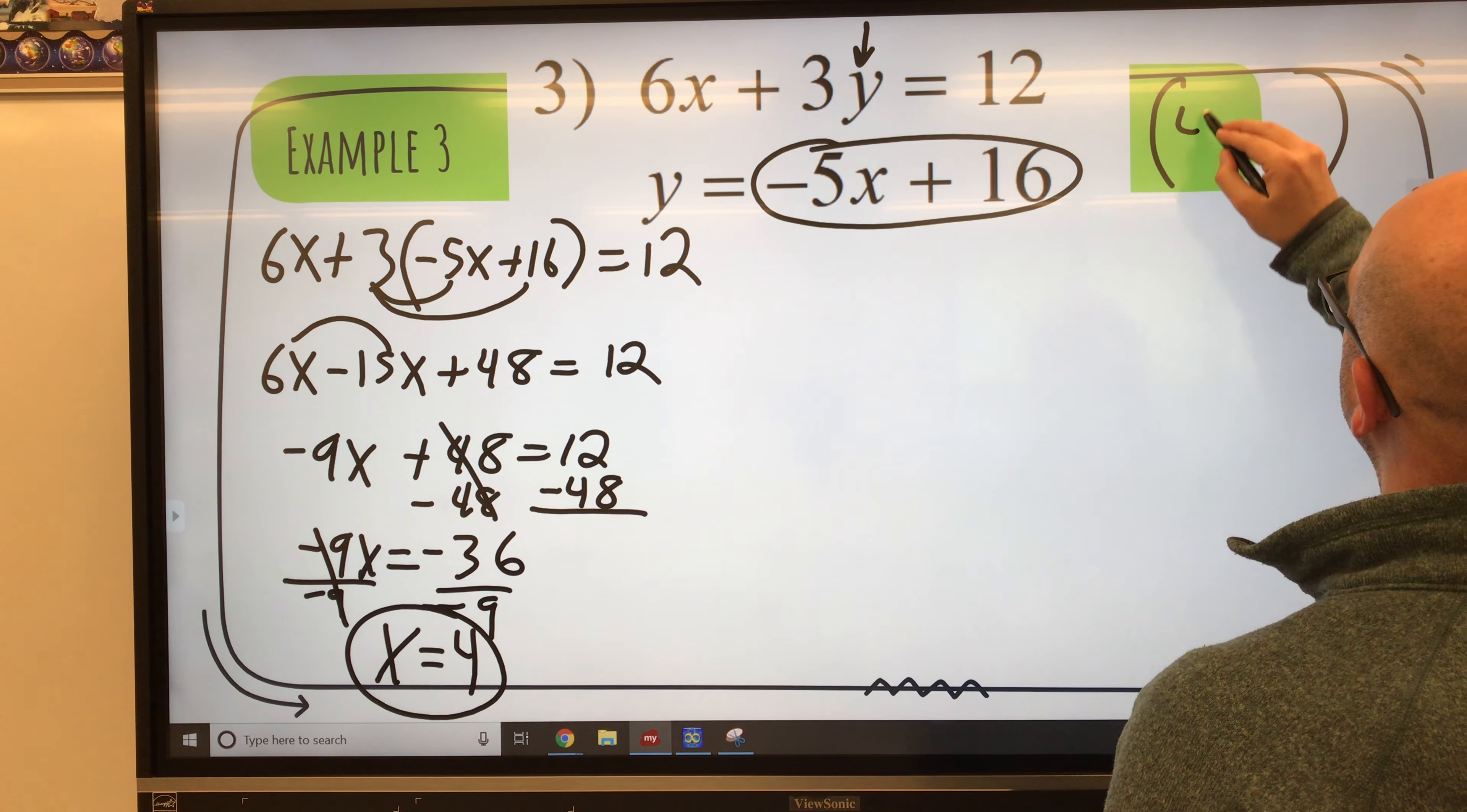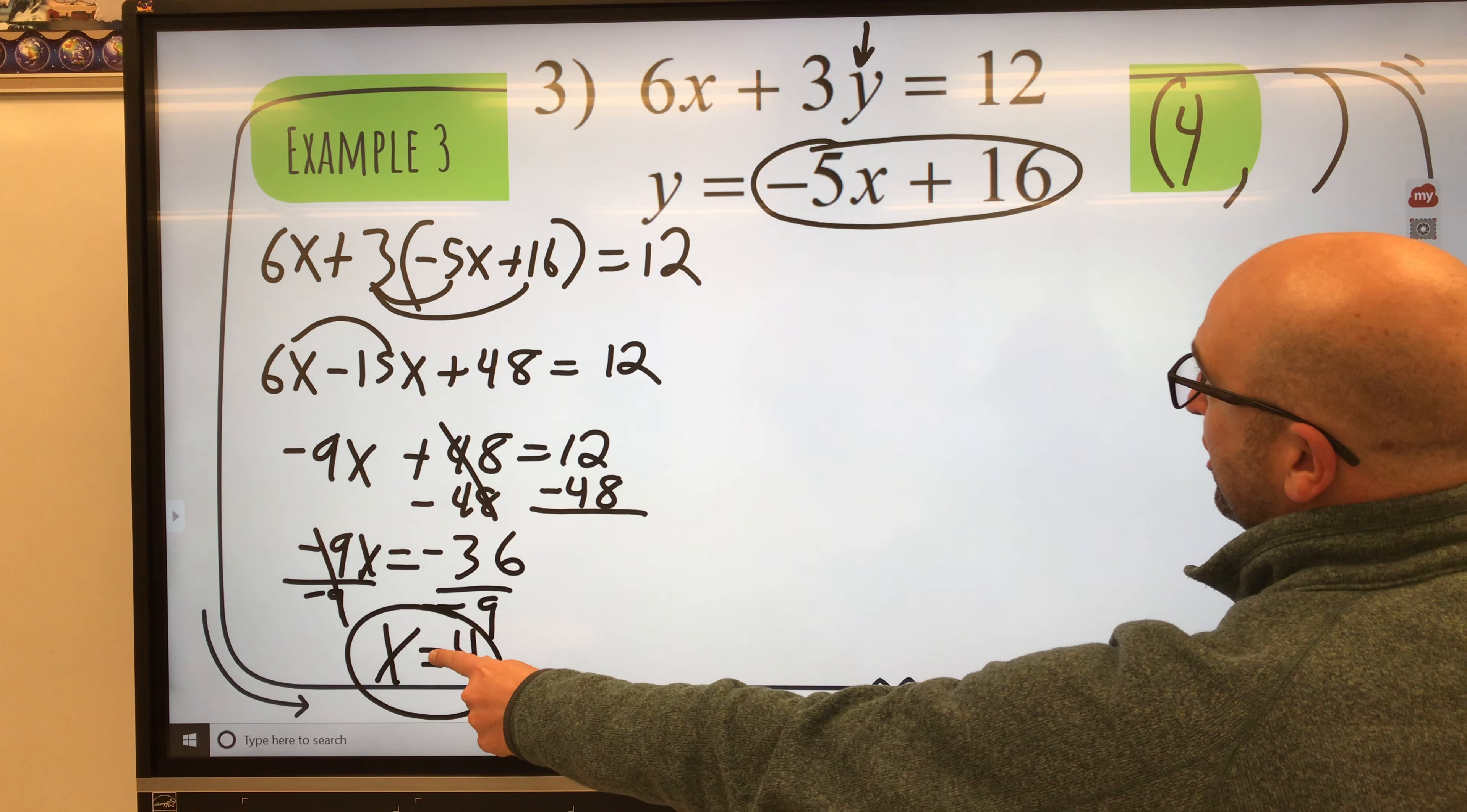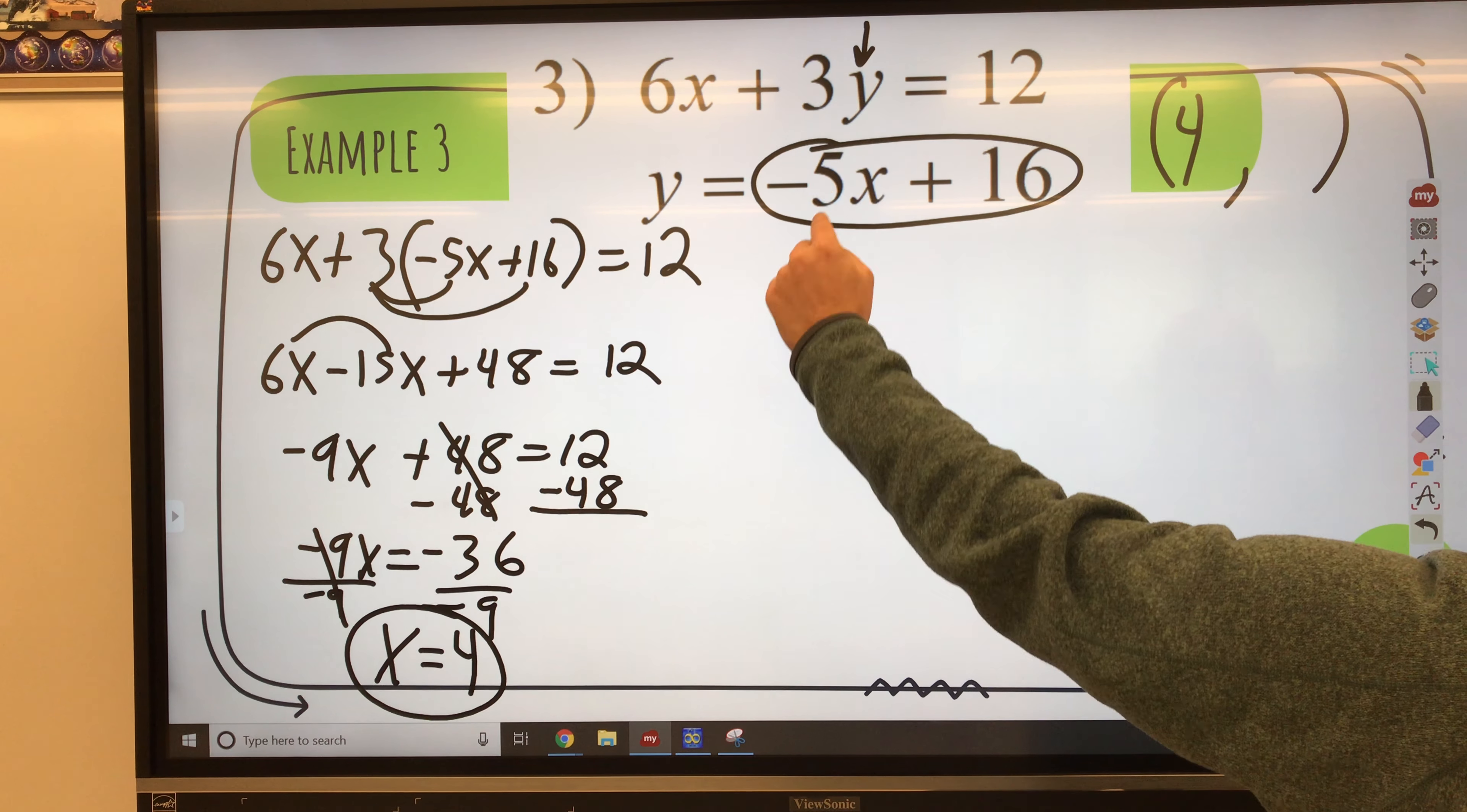So in my solution, my x value is positive 4. So to find my y value, I take that x value and I plug it in to x in either one of the equations. Remember, I choose the one that's already solved for y. It just makes it easier.